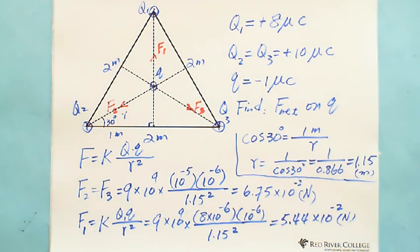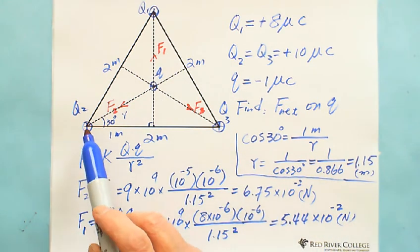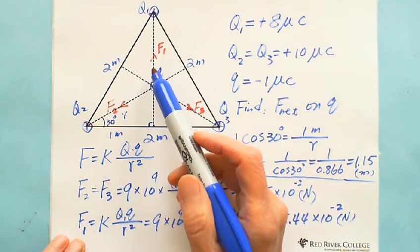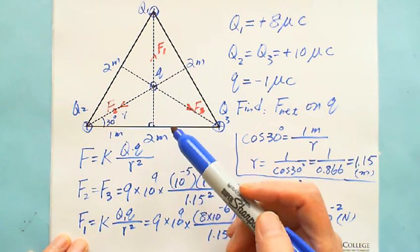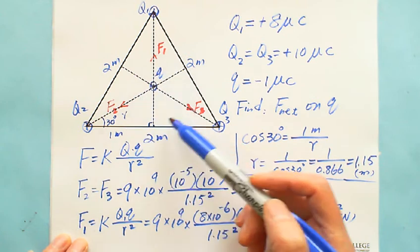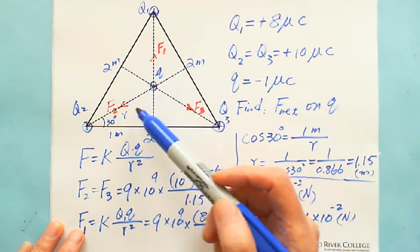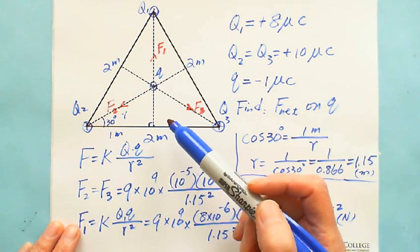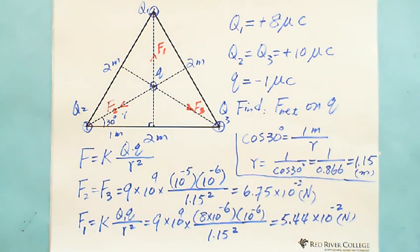So we have the three force magnitudes: F1 equals 5.44×10⁻² Newton, and F2 equals F3 equals 6.75×10⁻² Newton. Because these three forces are in different directions, we cannot just add them — they are vectors. Using vector addition, we need to get the components.